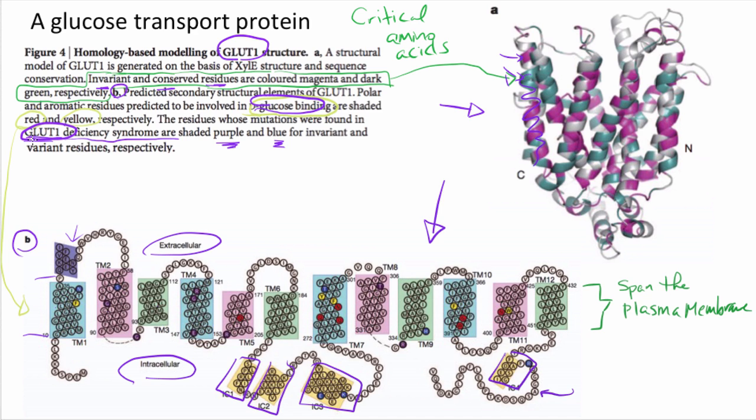Here, too, is something really interesting. There's something called a GLUT1. Some people are born with deficiencies of this protein. That happens to be because of mutations here. Or, you see these little blue circles. Those are the amino acids that are responsible for that deficiency.